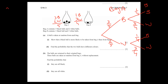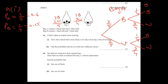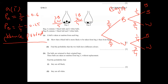Part (i): Show that a black ball is more likely to come from Bag A than Bag B. Probability of black from Bag A = 3/5 = 0.6. Probability of black from Bag B = 1/4 = 0.25. Since 0.6 is greater than 0.25, the black ball is more likely from Bag A. Hence proved.